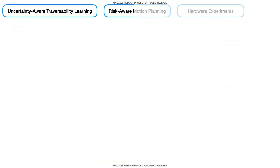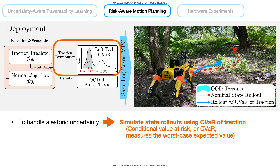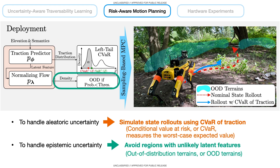The uncertainty-aware loss function improves learning accuracy and navigation performance compared to conventional cross-entropy-based loss functions. During deployment, we use a sampling-based model predictive controller for planning control sequences. To handle aleatoric uncertainty due to uncertain terrain traction, we simulate state rollouts using the Conditional Value at Risk (CVaR) of the traction parameters, where CVaR measures the worst-case expected value of a given random variable. To handle epistemic uncertainty due to novel terrain features, we assign high auxiliary costs so that the robot avoids out-of-distribution terrains.